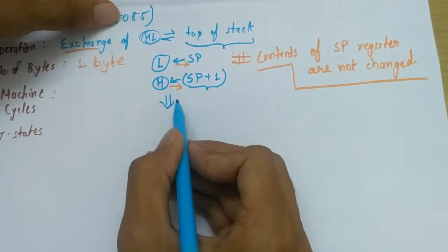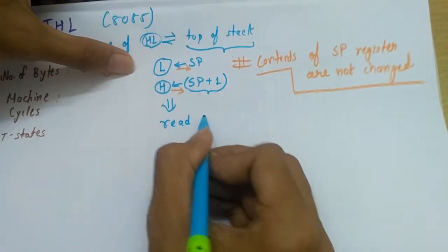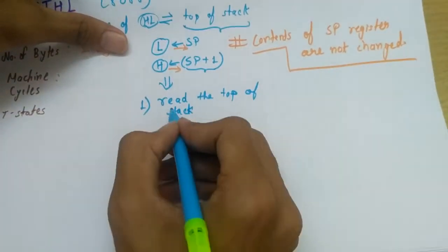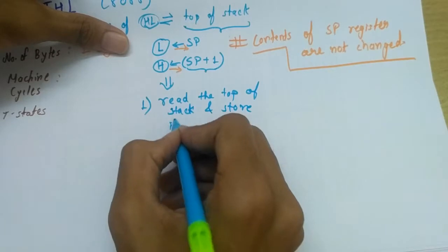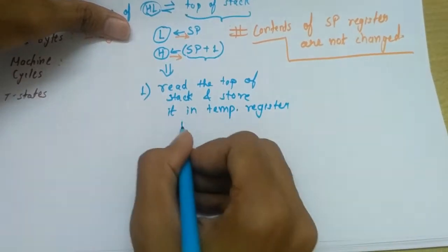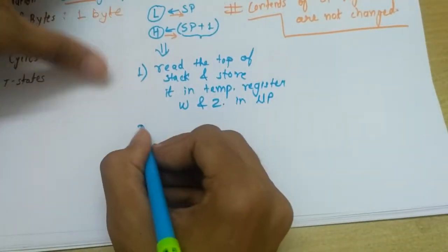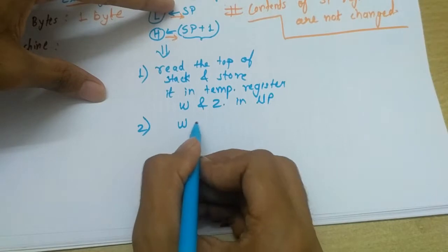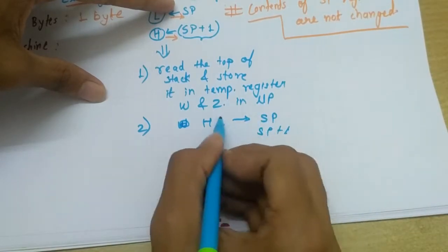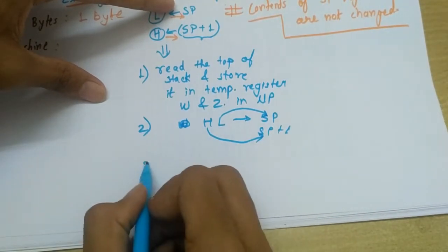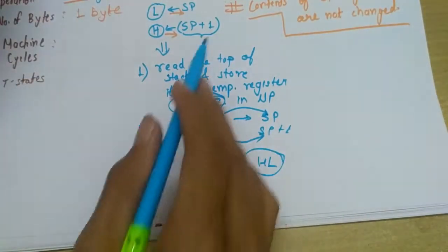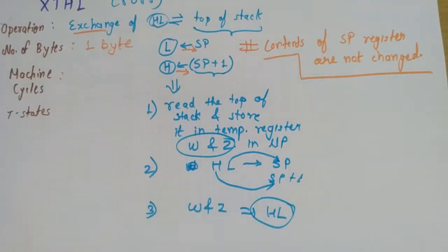Let's discuss what this instruction first does. First, it reads the top of the stack, that is, pops the top of the stack and stores it in temporary registers. As we know, we have two temporary registers W and Z in the microprocessor. Then the HL data will move towards SP and SP plus one. L data will move to SP location and H data will move to SP plus one. Then from W and Z, the data is copied into HL, so the whole exchange is now complete.